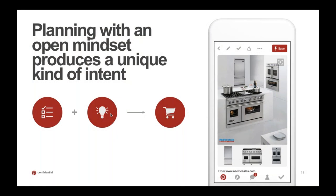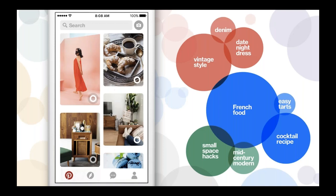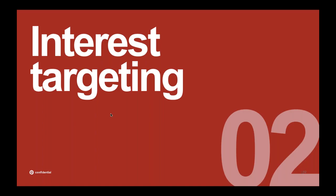Given this planning behavior so common to Pinterest, what makes our understanding different is the type of intent we're able to capture. We see ideas when they're still forming — when people are just starting to think about that new kitchen they want to create or that outfit they want to wear. We help turn dreams into reality. Did you know that on Pinterest, 97% of the searches we see are unbranded? This statistic really shows the special kind of early intent that people are signaling on Pinterest as they discover, save, and engage with ideas. They have a strong intent to act, buy, and do.